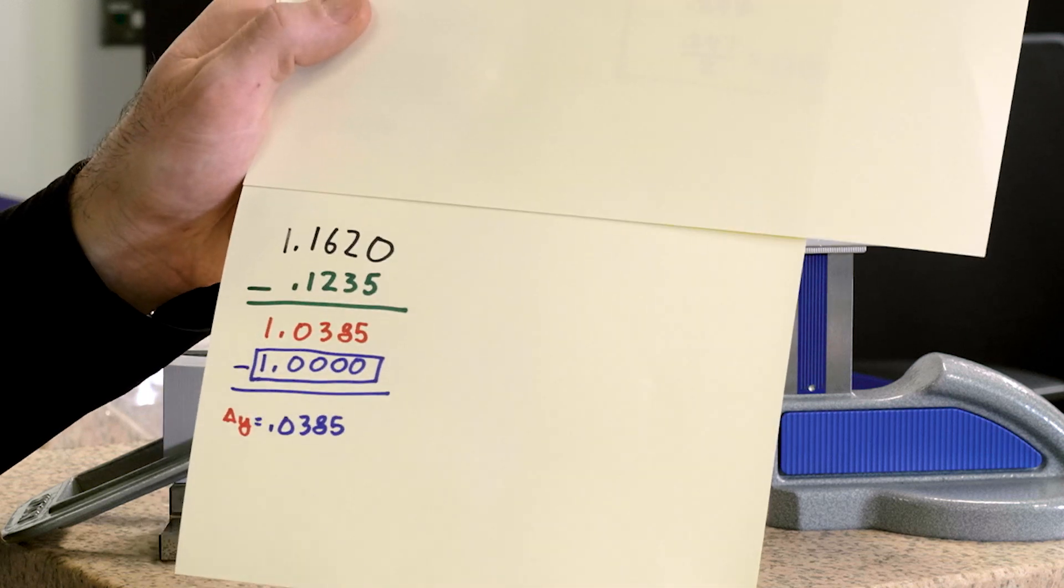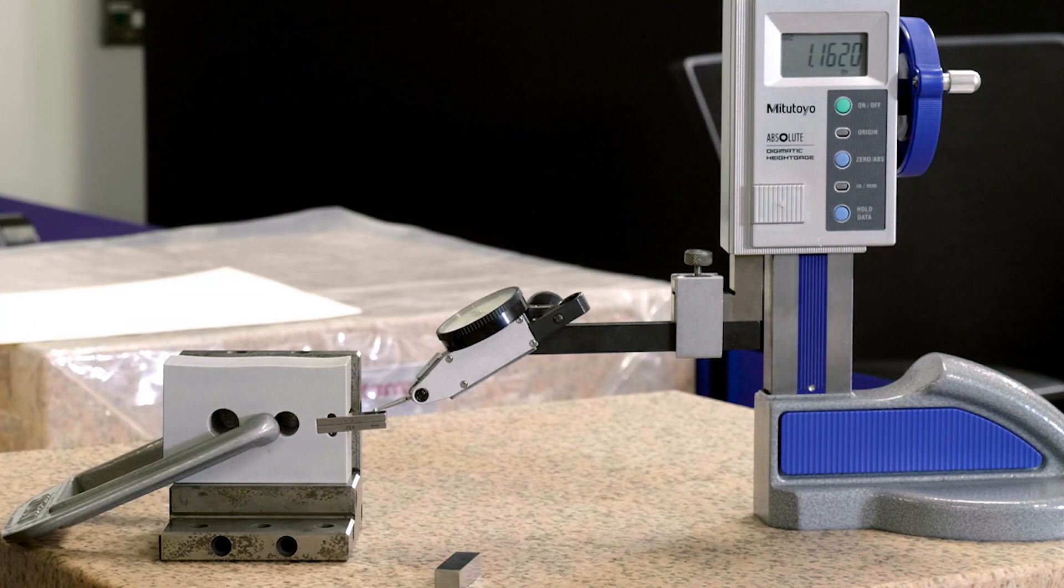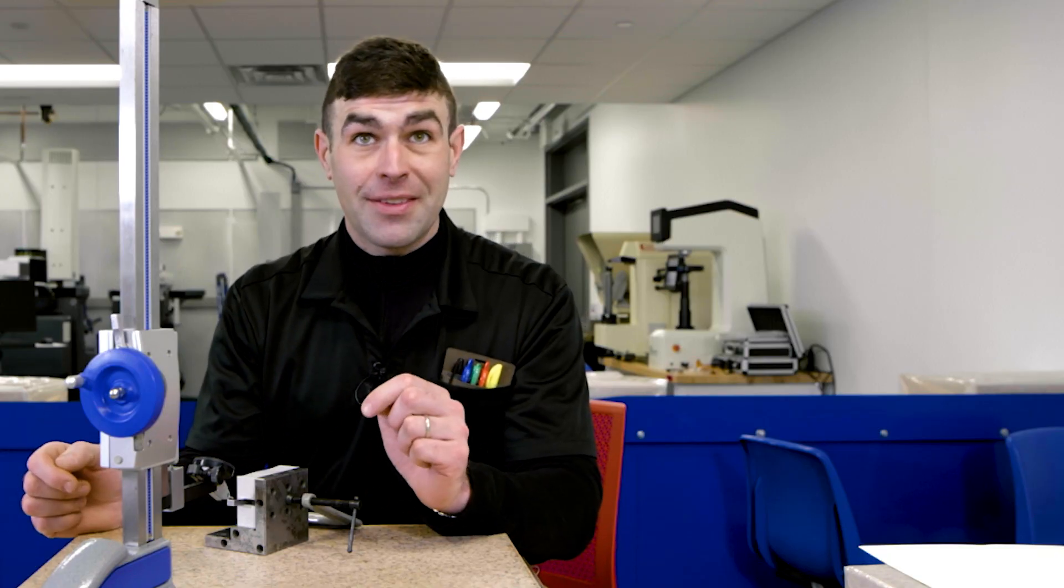Which would be over our 40 thousandths position tolerance. So we blew by it by a good amount, about 37 thousandths. A lot.